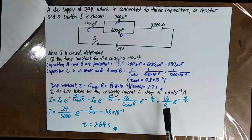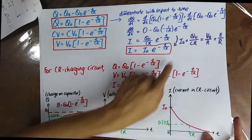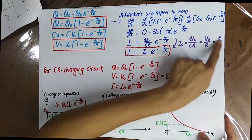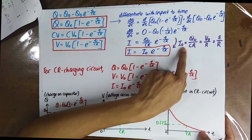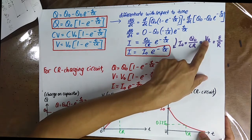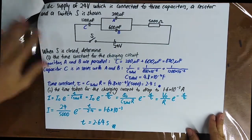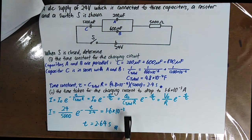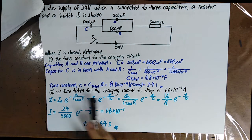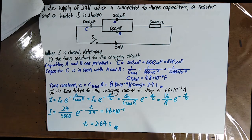Remember the formula for maximum current: the maximum potential difference across the capacitor divided by the resistance. By using the current formula I equals I0 times e to the power of negative T over CR, you can find the time taken for the current to reach the given value. The time is 2.64 seconds.